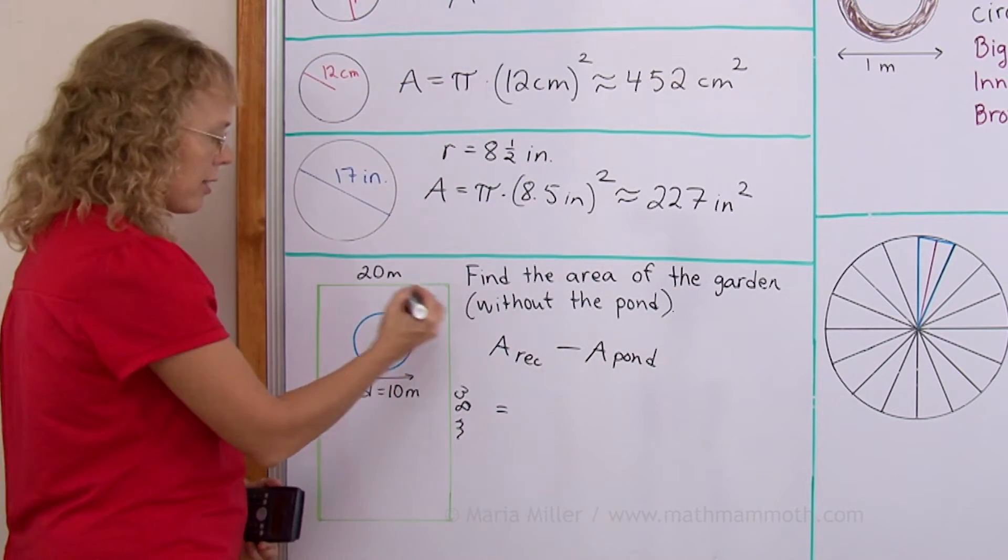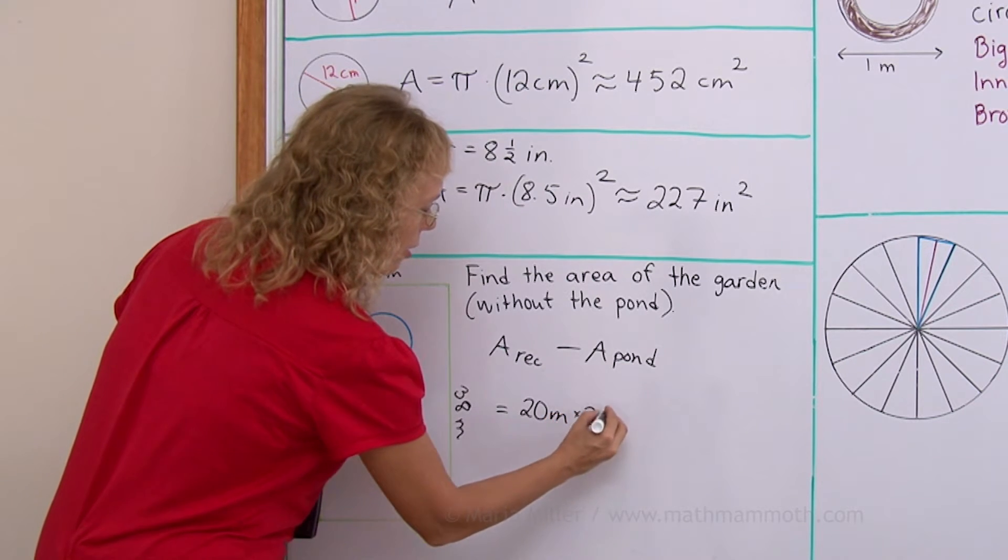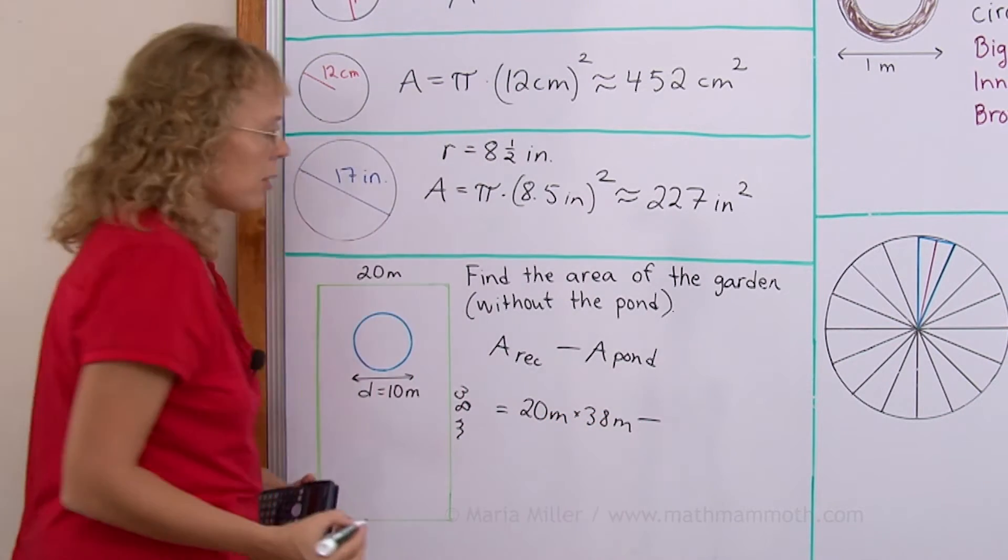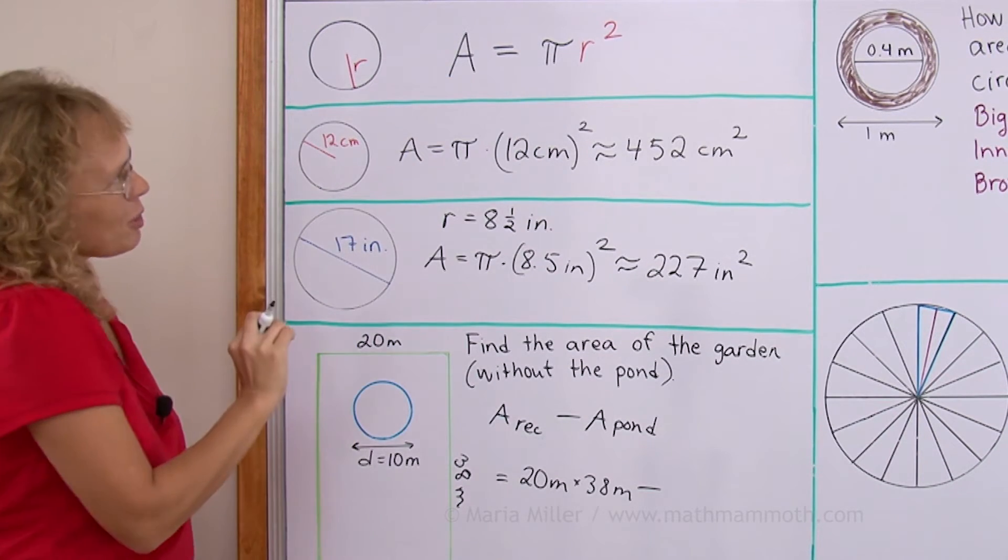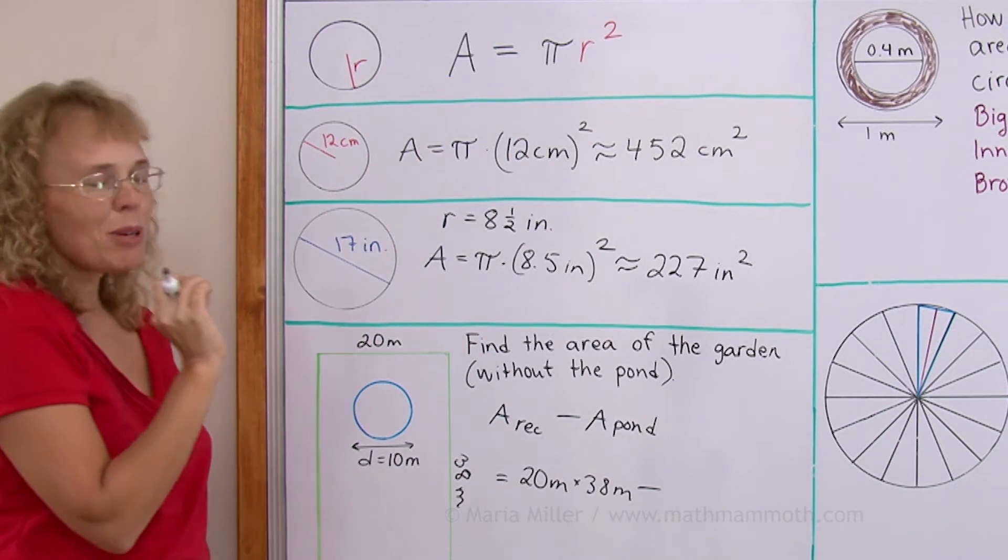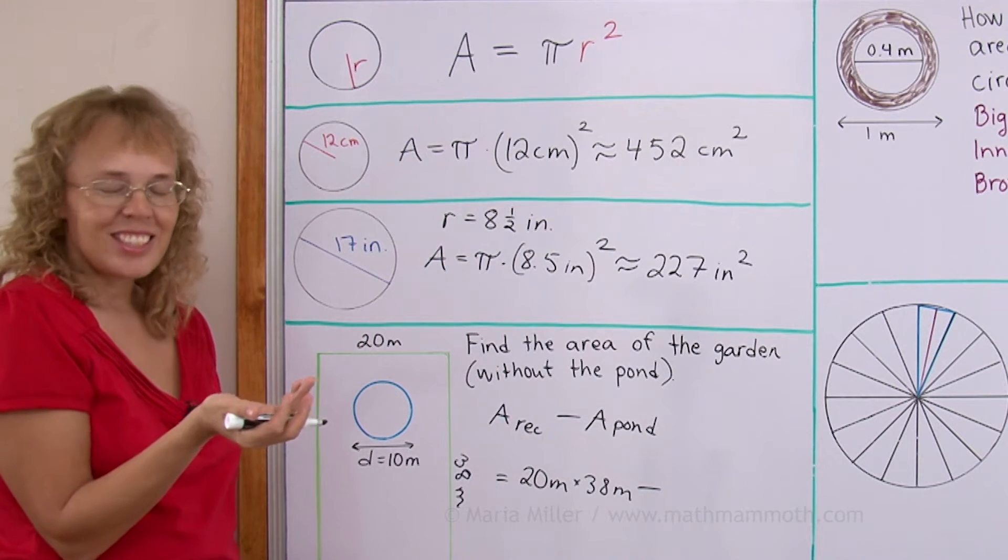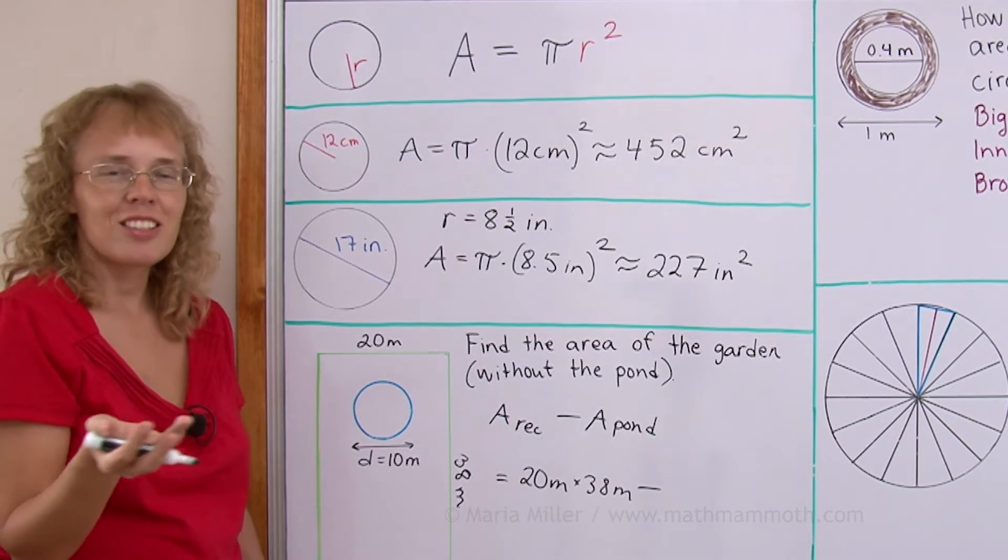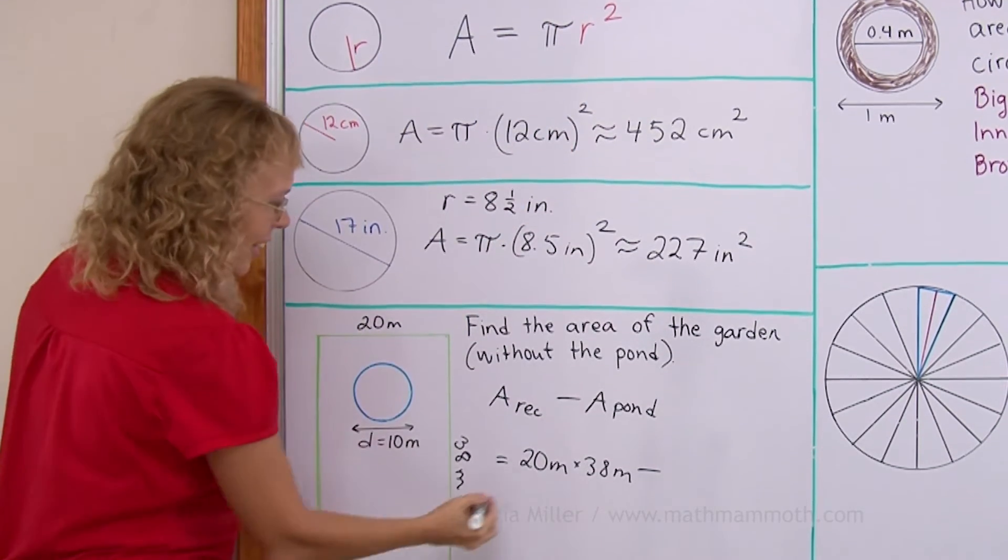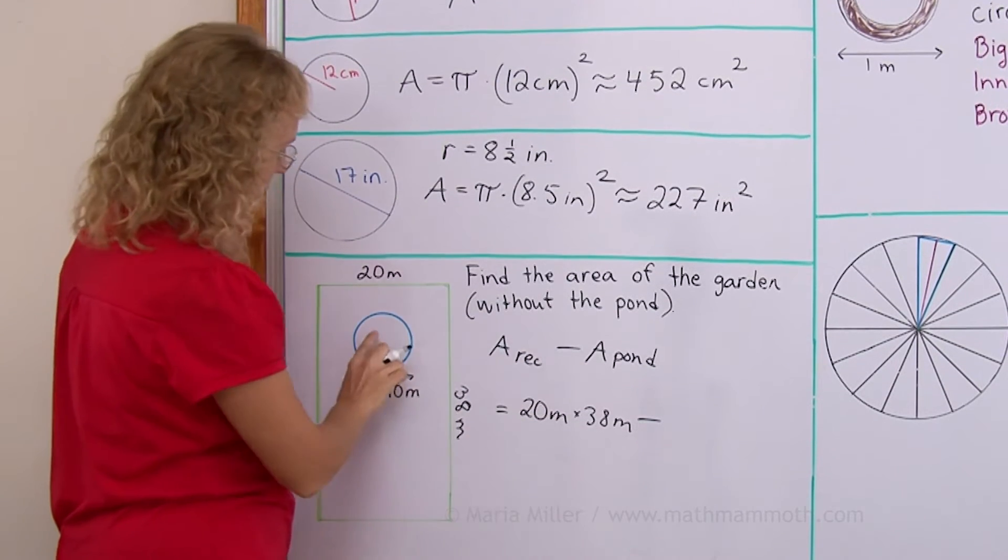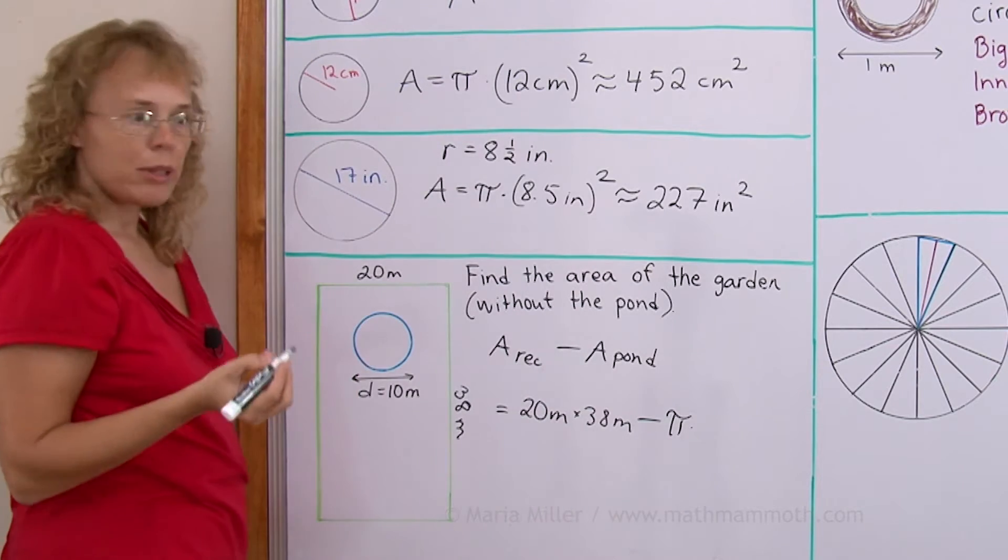And so, area of the rectangle is, of course, 20 meters times 38 meters. And take away area of the pond, which is pi r squared. One way to help you remember that is pi r squared, right? I mean, pies are usually round, circles. But this time, pi r squared. Anyway, back to the pond. Its area would be pi times radius squared.